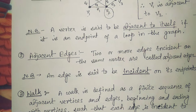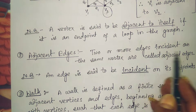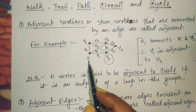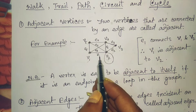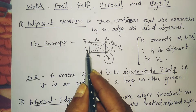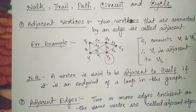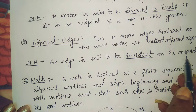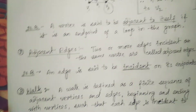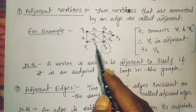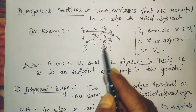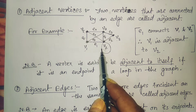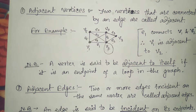Adjacent edges means two or more edges incident on the same vertex are called adjacent edges. For vertex v1, the edges e1, e8, and e5 are the adjacent edges. An edge is said to be incident on its endpoints — for example, edge e1 is incident on vertices v1 and v2.